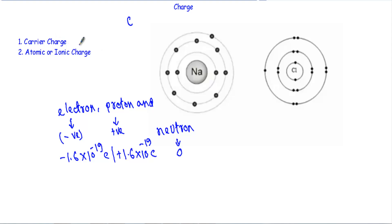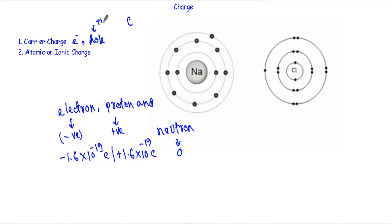Carrier charges are those which contribute to current conduction — that is, due to the movement of charges we obtain a current flow. For example, electrons produce current flow in a circuit, and in a p-type semiconductor, current flows due to the movement of holes, which are positively charged. Therefore, electrons and holes are known as carrier charges.